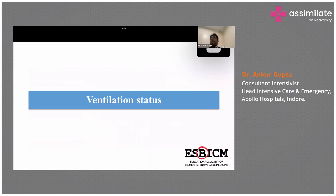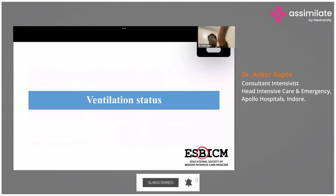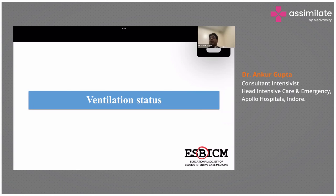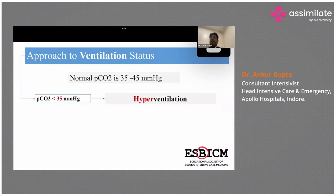Ventilator is straightforward. Here we are talking about TCO2. If the patient is ventilating nicely, TCO2 will be between 35 to 45. If the patient is not ventilating properly and is retaining CO2 — hypoventilation — the PCO2 will rise. And if the patient is hyperventilating, then you have PCO2 less than 35.